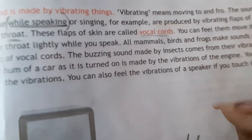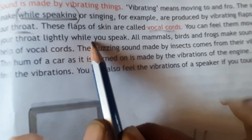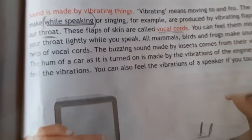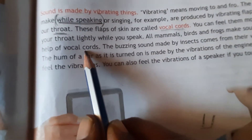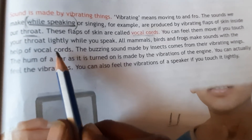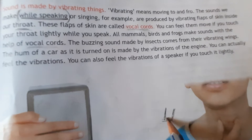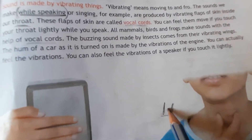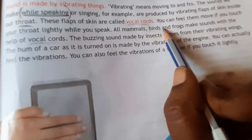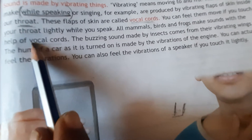You can feel them move if you touch your throat lightly while you are speaking. All mammals, birds, and frogs make sound with the help of vocal cords only. The two flaps present in their body produce vibration, and these two flaps are known as vocal cords. So mainly frogs, birds, and other mammals also produce sound with the help of vocal cords.